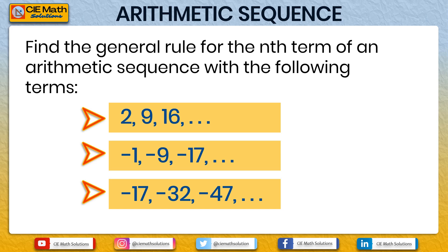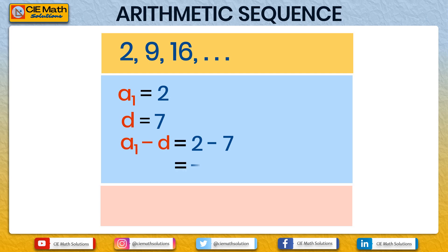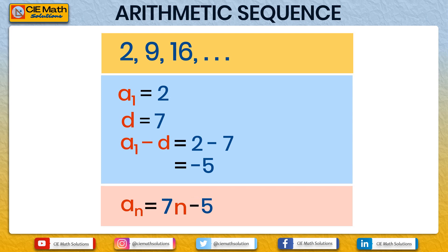Now let us check your answers. For the first sequence containing 2, 9, and 16, if your answer is an = 7n − 5, then you are correct. The first term a1 = 2 and the common difference d = 7. Using the shortcut: a1 − d = 2 − 7 = −5. So the general rule is an = 7n − 5.